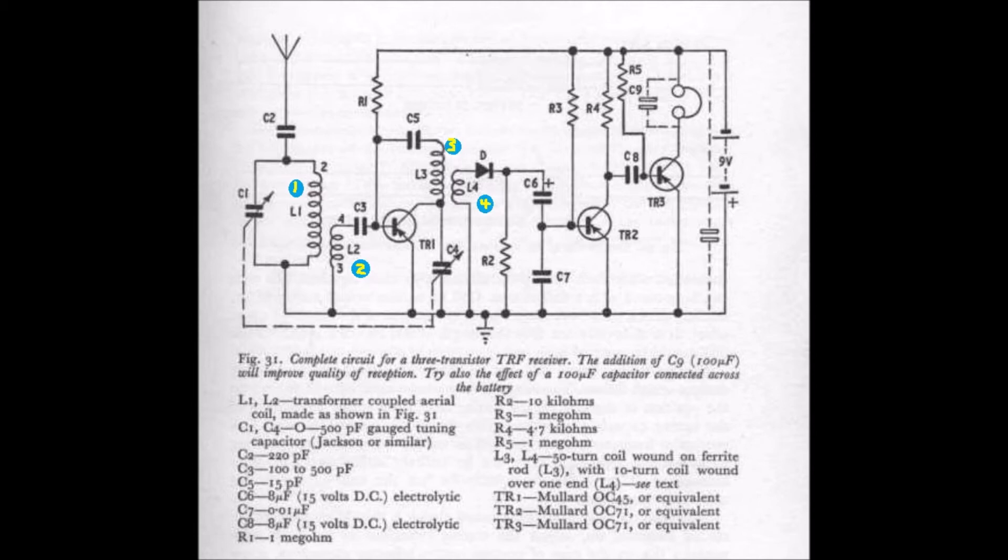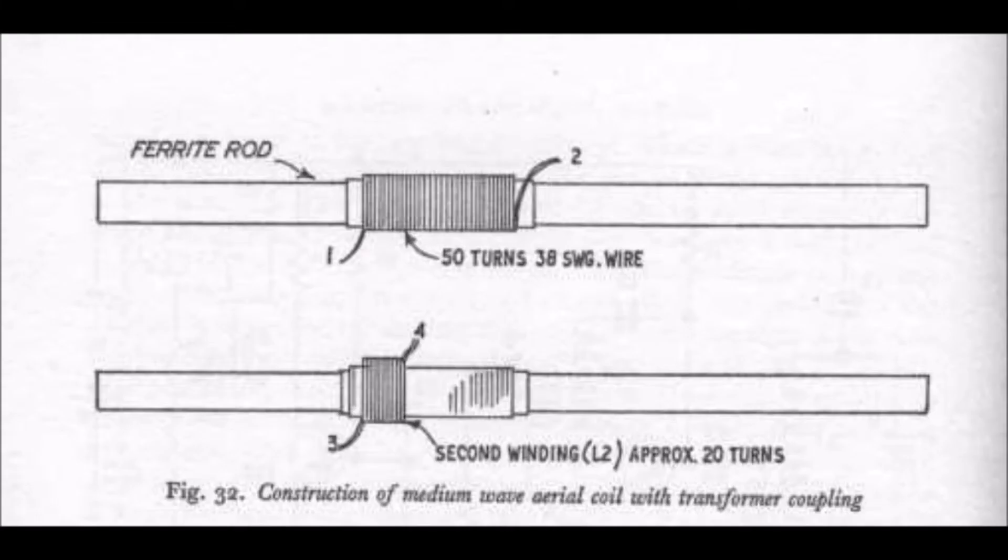Coil L3 consists of 50 turns of 38 SWG wire, the same as L1, but has a center tap, i.e. a barred loop at 25 turns. Coil L4 is 10 turns of 38 SWG wire, wound over one end of L3.